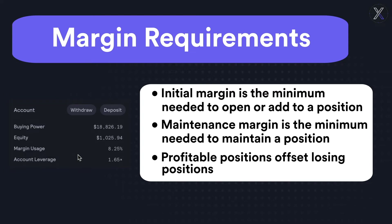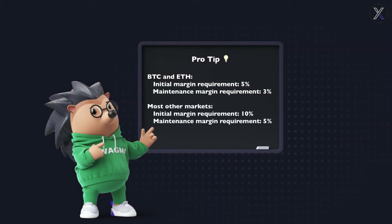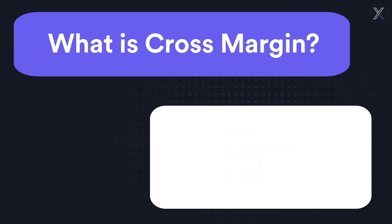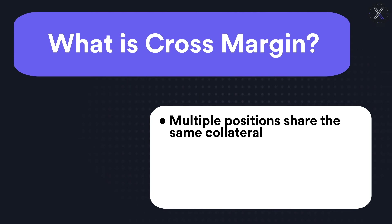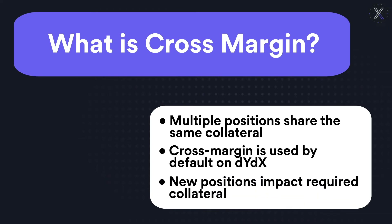Profitable positions will offset losing positions within a cross-margin strategy, whether or not a profitable position is closed. Cross-margining is when an account holds multiple positions which share the same collateral. On DYDX, cross-margining is used by default, meaning that all of your positions relate back to the amount of USDC held within your DYDX account. As you open new positions in your account, this will impact the amount of collateral you'll be required to hold within your account.